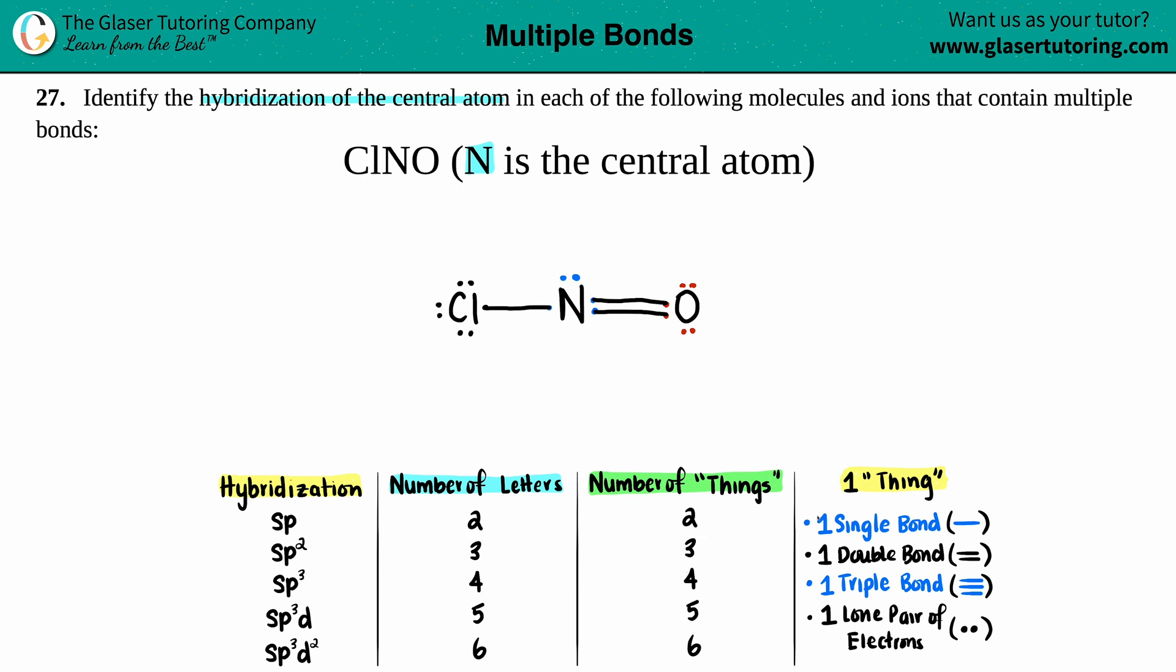One thing is classified as either a single bond (one line), one double bond (even though you see two lines, it's still classified as one thing), a triple bond, or one lone pair.